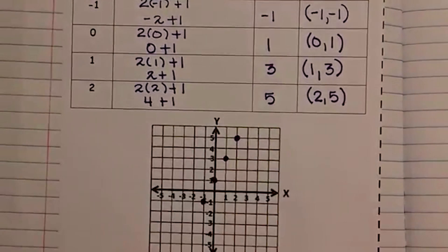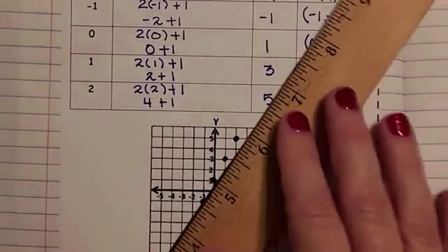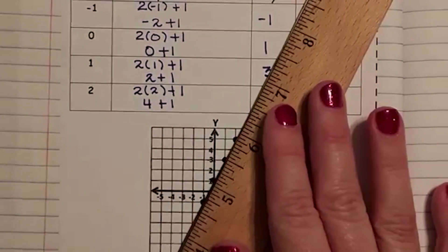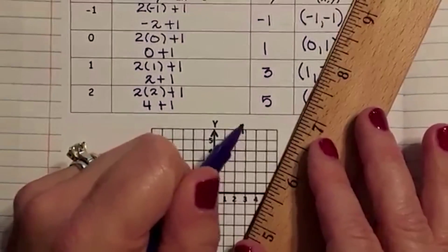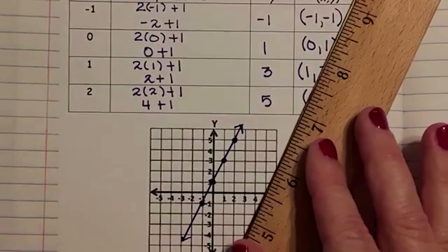Alright, so I have my 4 points. I'm going to take my straight edge or my ruler, and I'm going to graph the line. Remember, if it wasn't straight, then we made a mistake.